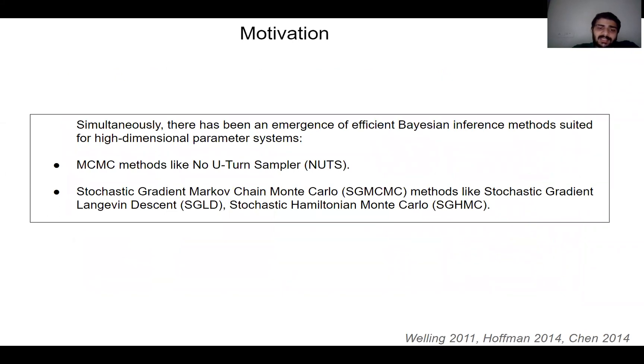Simultaneously, since 2010, there has been an emergence of robust Bayesian inference methods suited for high-parameter systems, including MCMC methods such as the No-U-Turn Sampler, NUTS, and Stochastic Extensions, which include Stochastic Gradient Langevin Descent, SGLD, and the Stochastic Gradient Hamiltonian Monte Carlo, SGHMC.